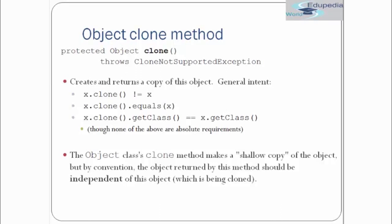Though none of the above are absolute requirements, the object class clone method makes a shallow copy of the object. By convention, the object returned by this method should be independent of the original object — meaning changes in the new object should not impact the original object. So it should be independent.